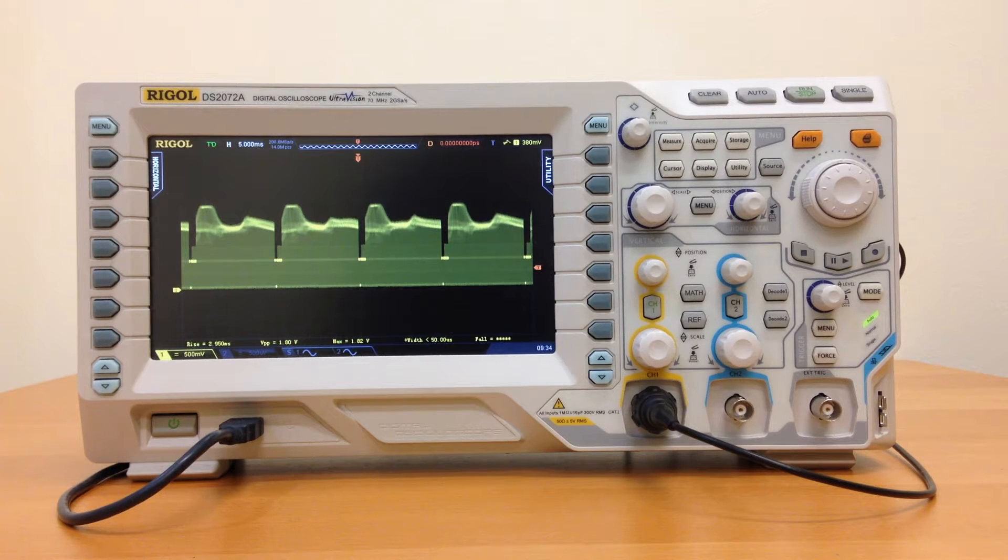RIGOL DS2008 two-channel DSOs offer unsurpassed price performance. Bandwidths range from 70 to 300 megahertz, memory depths up to 28 mega points. Combined with a fast 50,000 waveforms per second update rate means you won't miss any signals.